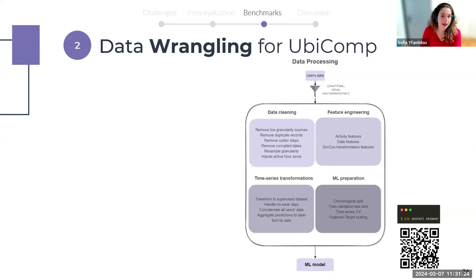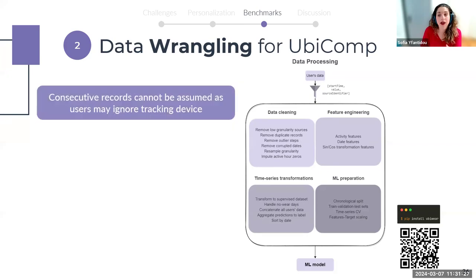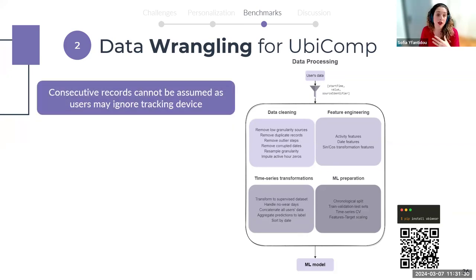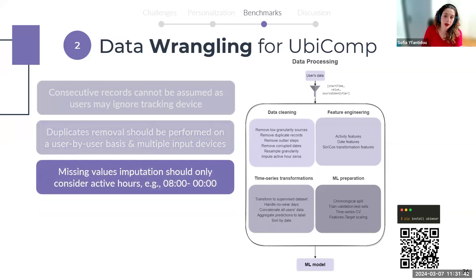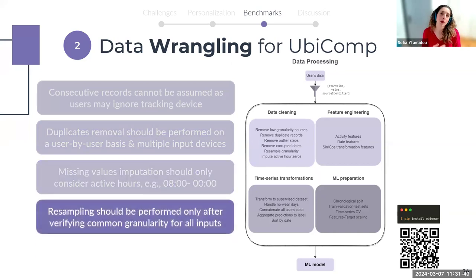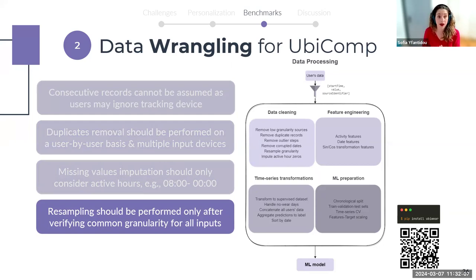In response to these idiosyncrasies, we comprehensively benchmarked different data pre-processing methods in terms of data cleaning, feature engineering, time series-related transformations, and machine learning preparation. Great effort is required to adapt these methods to time series data. For example, consecutive records cannot be assumed since users do not always wear their device; duplicate removal should be performed on a user-by-user basis; missing values imputation should refer only to active hours; and resampling should be performed only after verifying a common granularity. We also published a Python library available via pip to automate such pre-processing for self-tracking data.